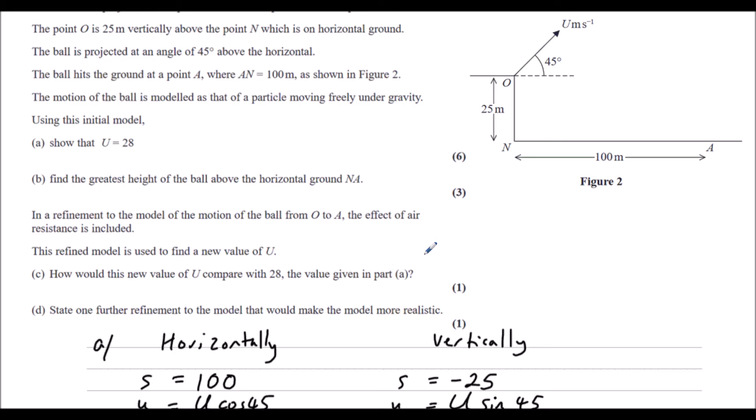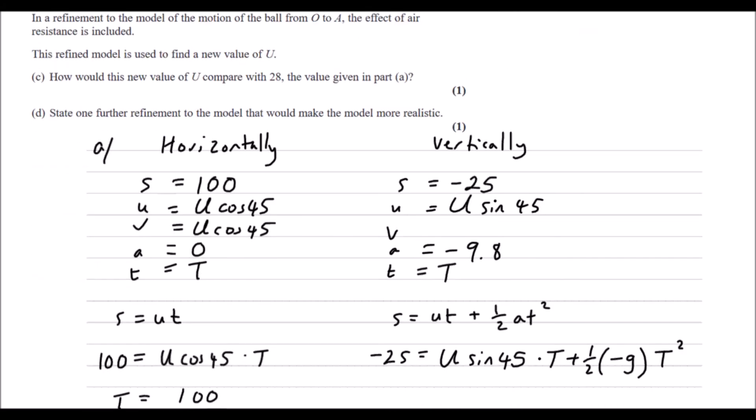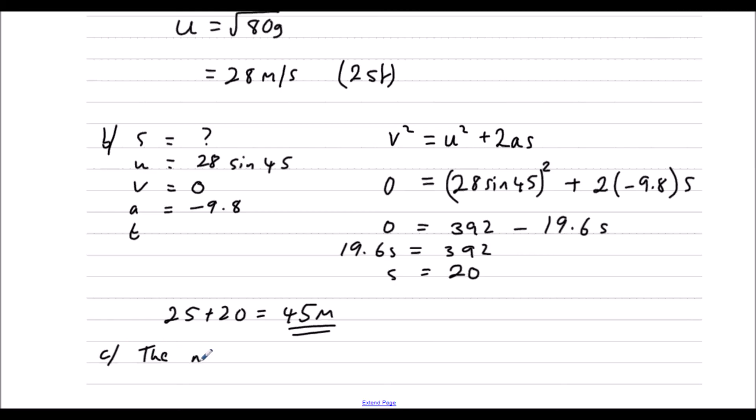In a refinement to the model of the motion of the ball from O to A, the effect of air resistance is included. This refined model is used to find a new value of U. So how would this new value of U compare with 28? In order for the ball to go 100 meters, in order for it to move the same distance with air resistance, it would have to be projected with a higher speed. So U would have to be higher. The new U would be higher. The new value of U would be higher or greater.